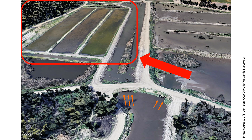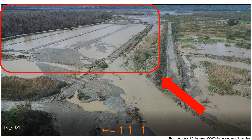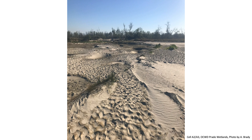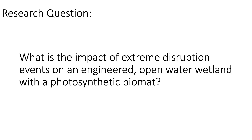Unfortunately, an opportunity to investigate the impacts of a flood event happened in February of 2019, when the demonstration scale wetlands, shown here in the red box and the rest of the Prado wetlands, were inundated by an unseasonably high flow event that brought large amounts of sediment into the wetland. When the water was turned off to assess damage and conduct repairs, the open water wetlands became this, and eventually this. This event provided the opportunity and impetus to investigate the impact of extreme disruption events on an engineered unit process open water wetland with a photosynthetic biomat.